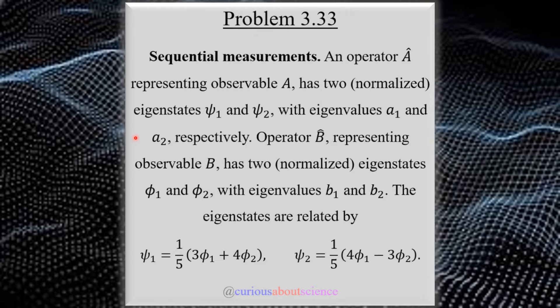Operator B hat, representing observable B, has two normalized eigenstates, phi 1 and phi 2, with eigenvalues B1 and B2.